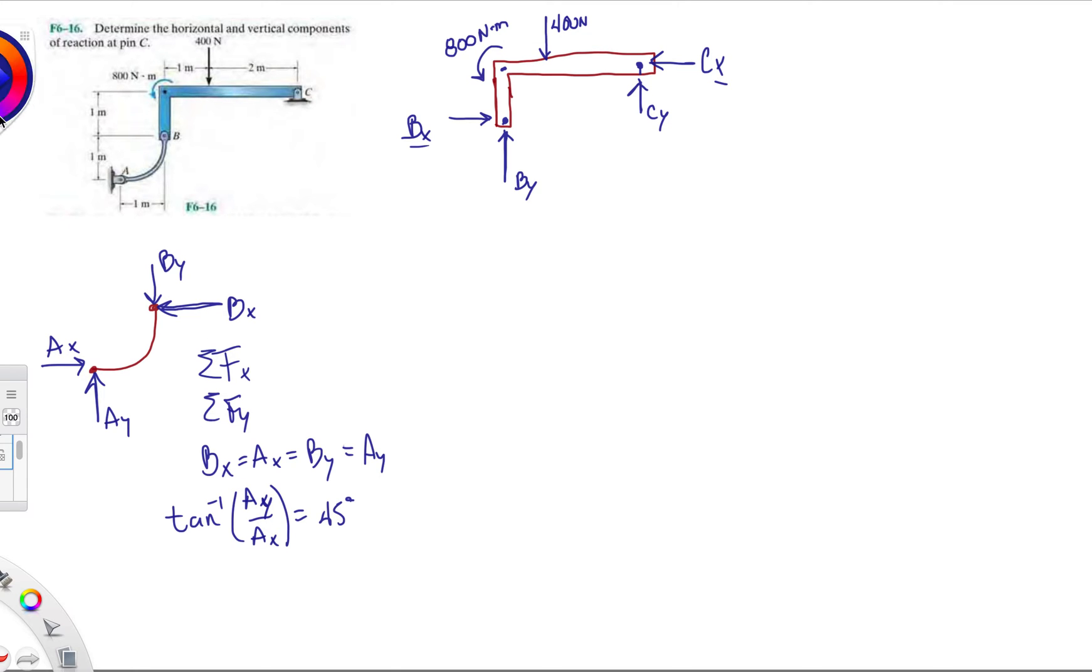So pretty much the magnitude of the reactions at B is going to be, let's just call it AB at a 45 degree angle. So this is telling me that at point B over here, we have to draw it the opposite way in compression. This is telling me that AB has an angle of 45 degrees, whichever way you draw it.